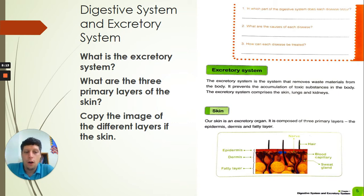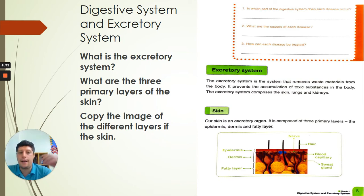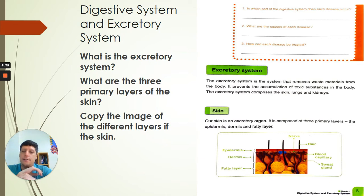In the dermis, you will find blood capillaries — they are like blood cells. And then underneath that, you will find sweat glands. That is what the different layers of your skin comprise of: three different layers.